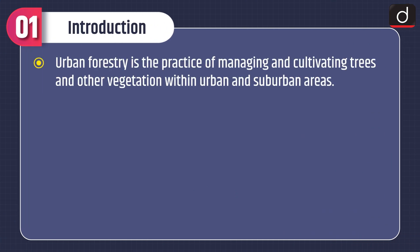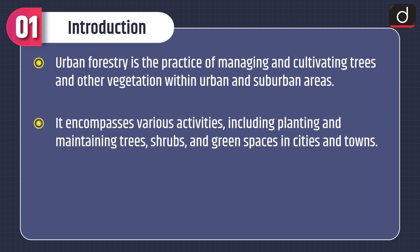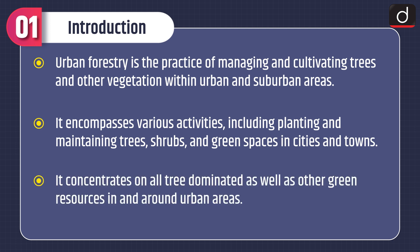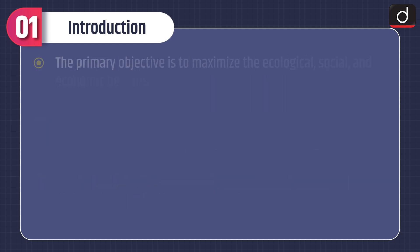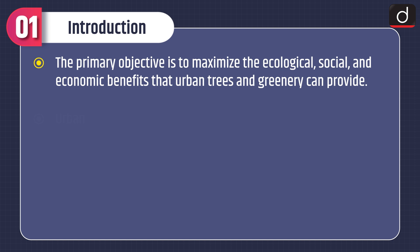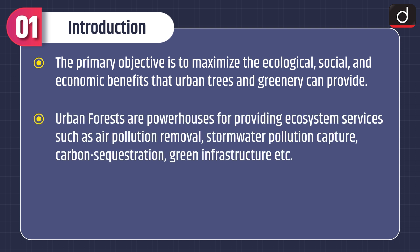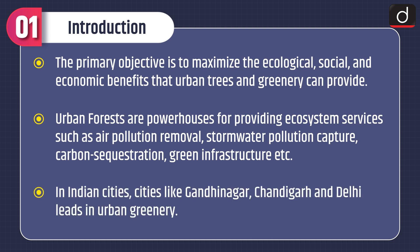Urban forestry is the practice of managing and cultivating trees and other vegetation within urban and suburban areas. It encompasses various activities including planting and maintaining trees, shrubs, and green spaces in cities and towns, concentrating on all tree-dominated and other green resources in and around urban areas. The primary objective is to maximize the ecological, social, and economic benefits that urban trees and greenery can provide. Urban forests are powerhouses for providing ecosystem services such as air pollution removal, storm water capture, carbon sequestration, and green infrastructure. In Indian cities, Gandhi Nagar, Chandigarh, and Delhi lead in urban greenery.